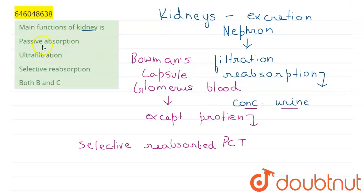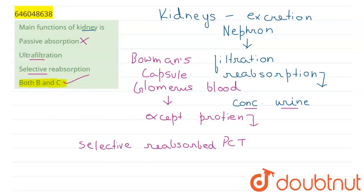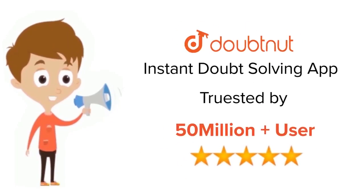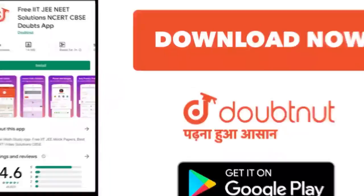Looking at our options, passive absorption does not happen in the kidney, so that is a wrong option. Both ultrafiltration and selective reabsorption occur, leading to the formation of urine. So both B and C are the correct answers — the main functions of the kidney are ultrafiltration and selective reabsorption. Download the DoubtNut app today, trusted by more than 5 crore students for classes 6–12, IIT JEE, and NEET.